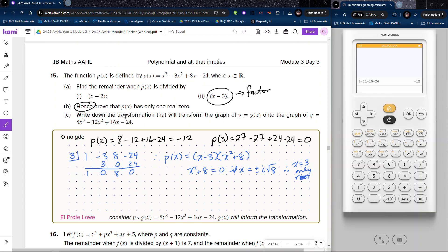Then if we want to write down the transformation that will transform the graph of y equals P of x onto the graph of y equals—and really this should probably have a line break there, that's bad form—y equals 8x cubed minus 12x squared plus 16x minus 24.